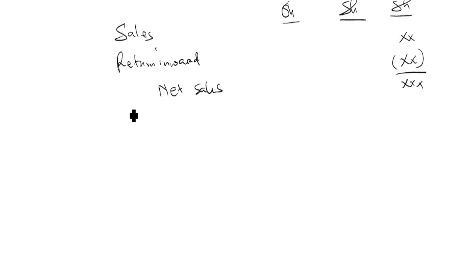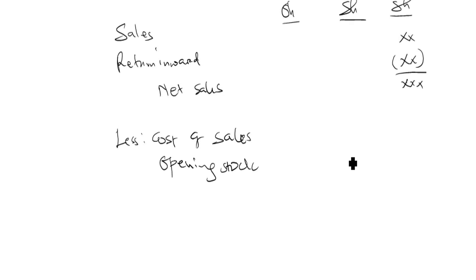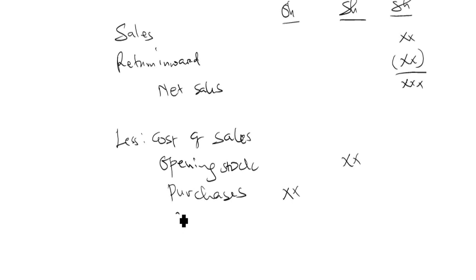The cost of sales is supposed to be subtracted from the sales. The cost of sales will have three parts: the opening stock, purchases and their adjustments, and then the closing stock. Starting with the opening stock in the middle column for adjusting purchases — you have the purchases, and we adjust them. First, purchases are adjusted by carriage inward.